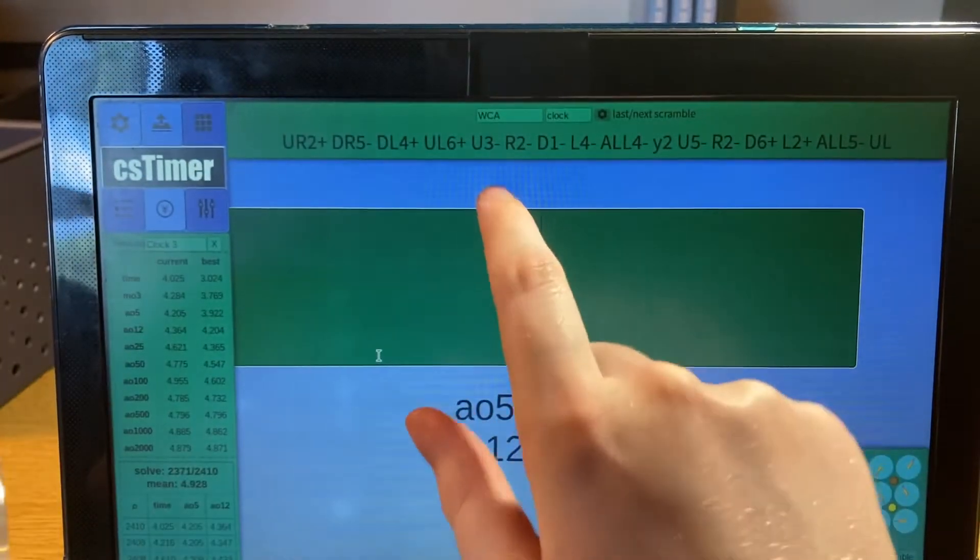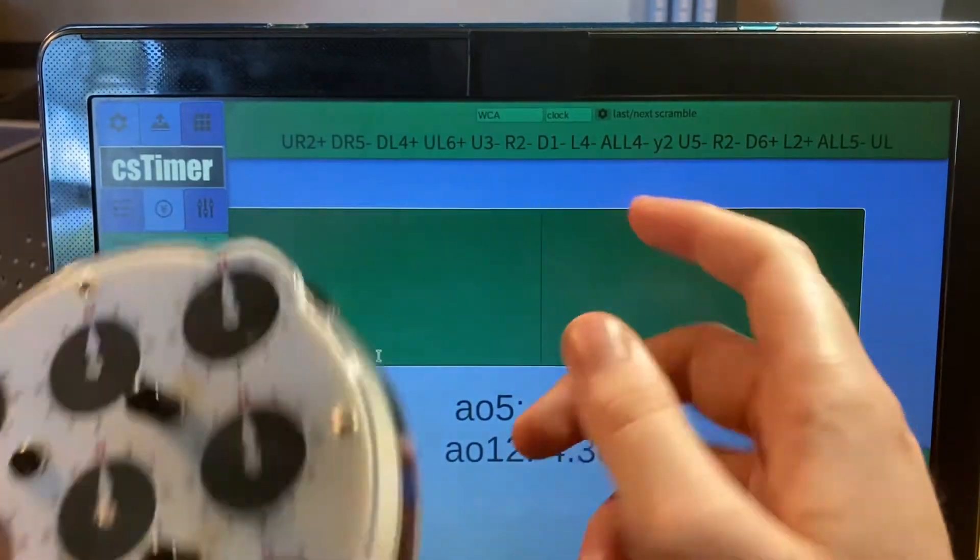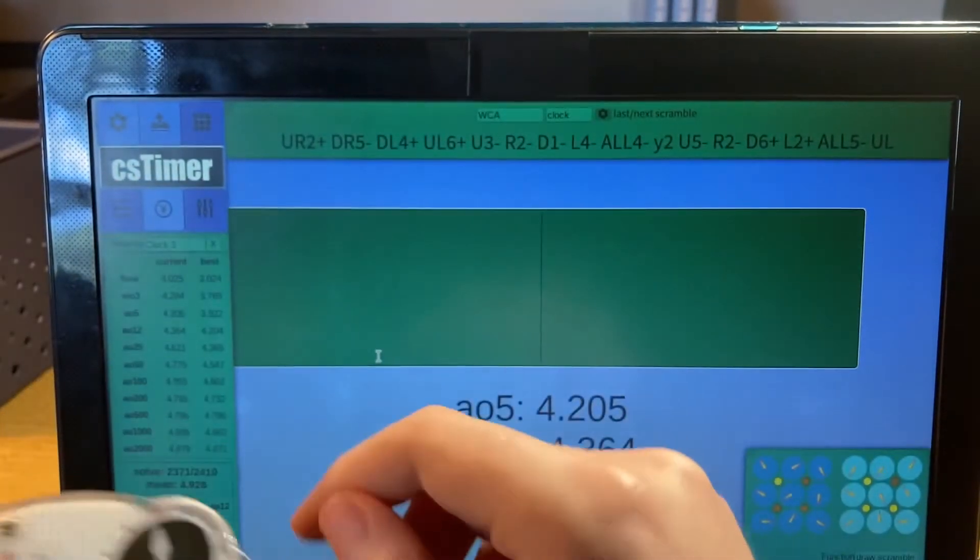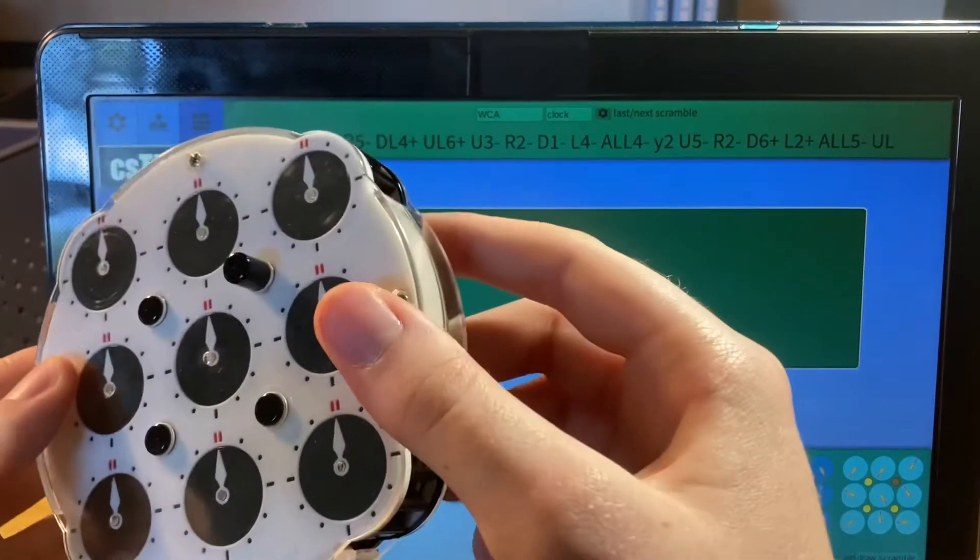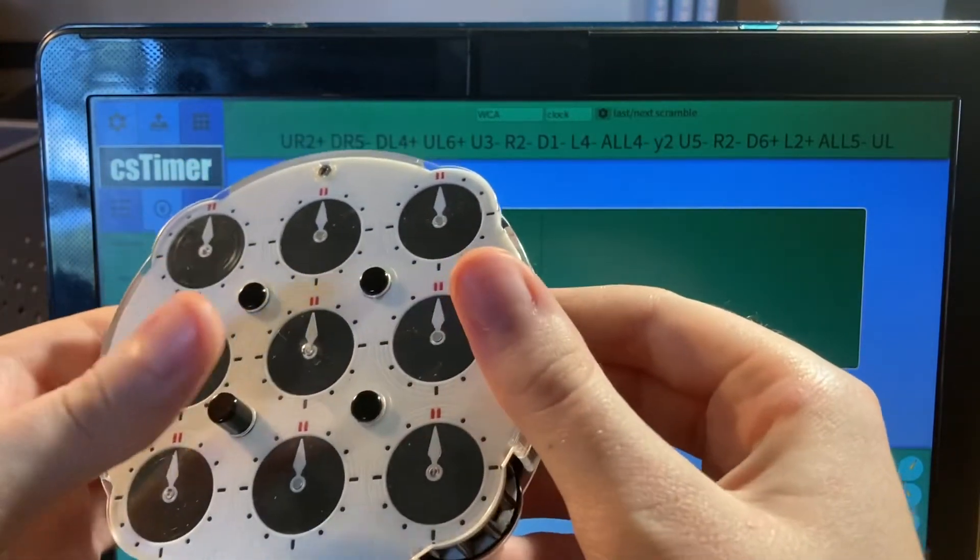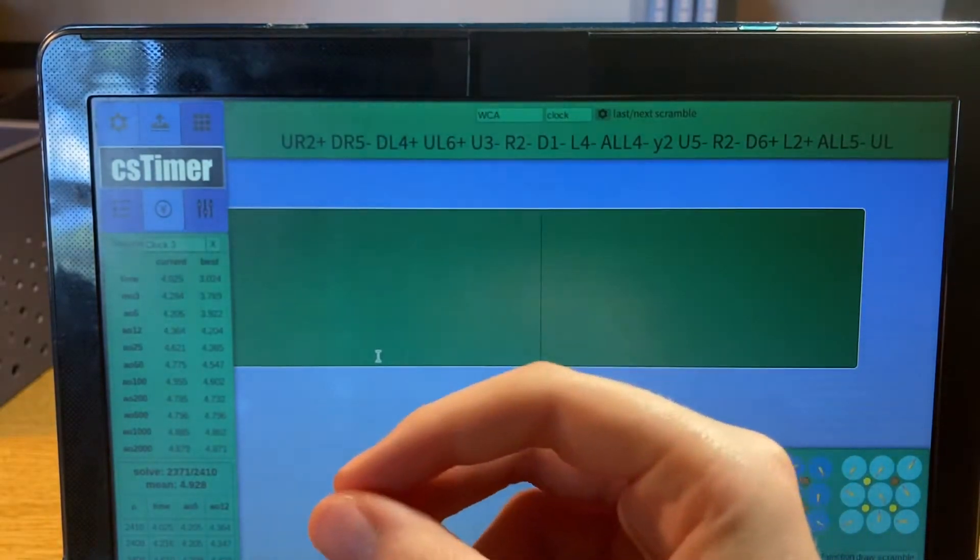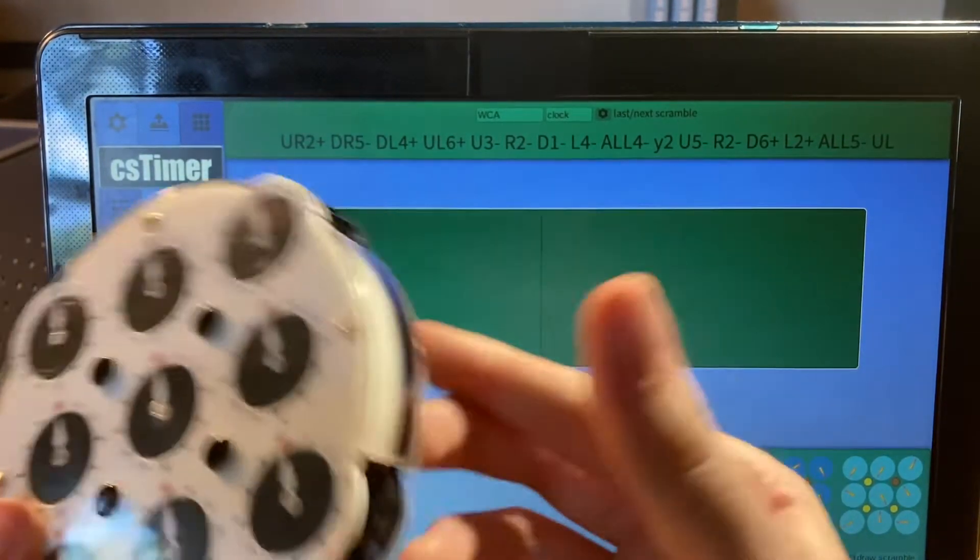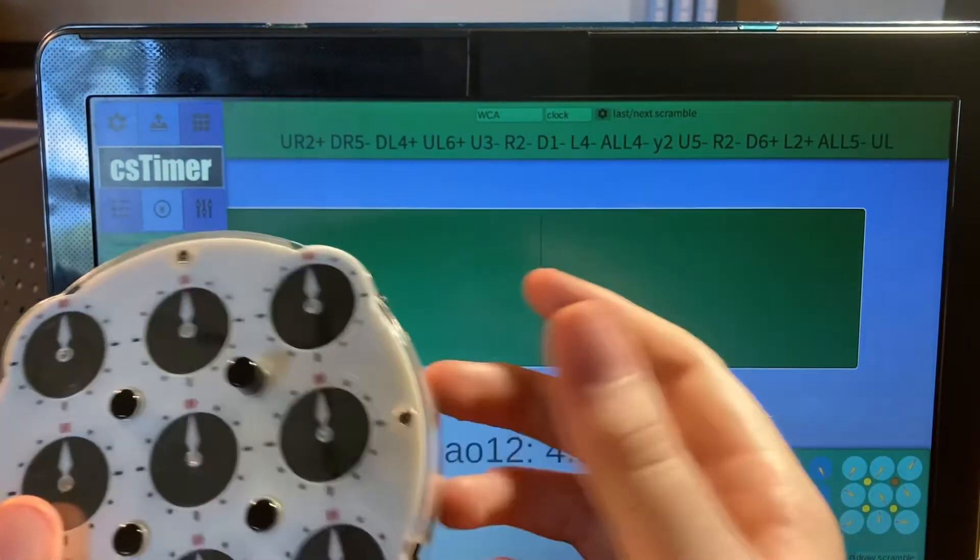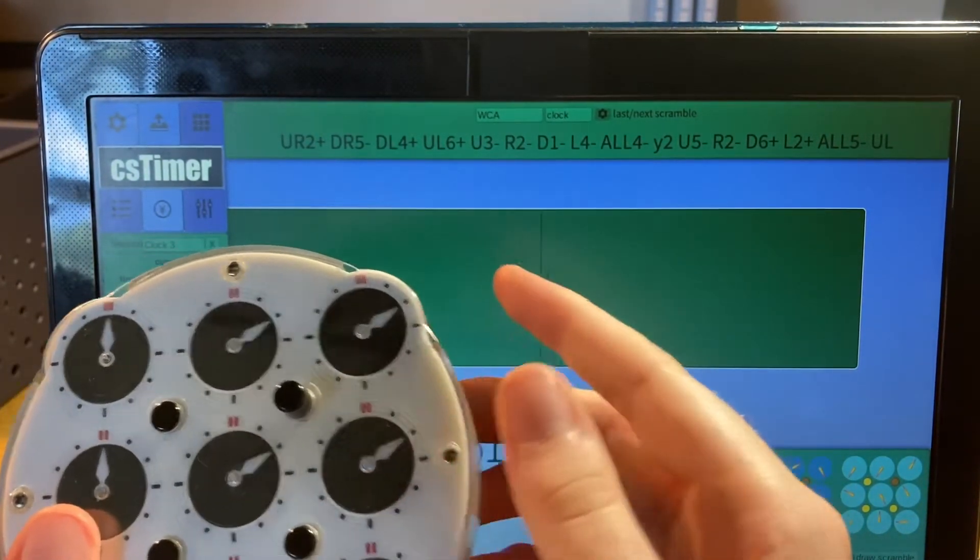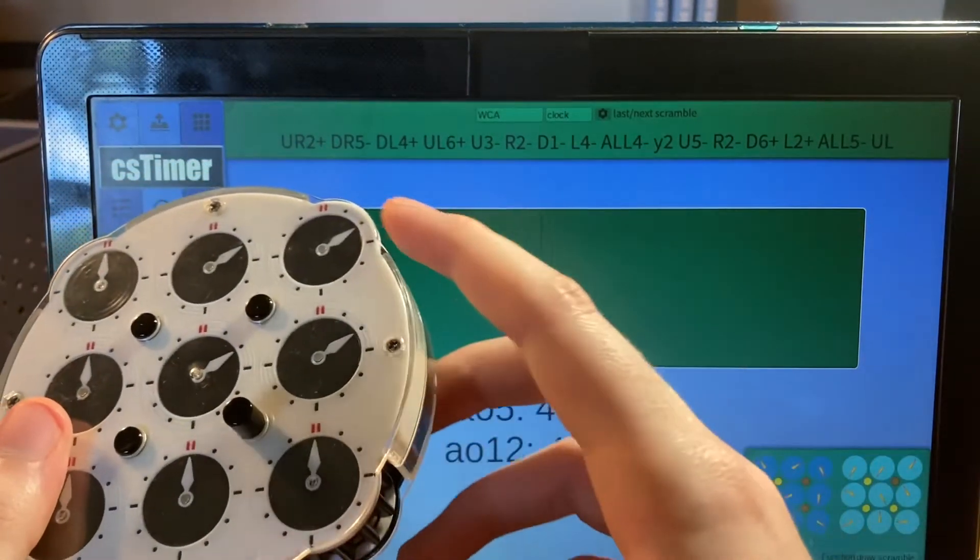R would mean both right pins, and so on for D and L. All means all the pins are up. For these first four moves, it means you're turning with one pin up only for each move. The number after it tells you how many clicks to turn. A 2+ means turning two clicks clockwise, and a 5- means five clicks counterclockwise.